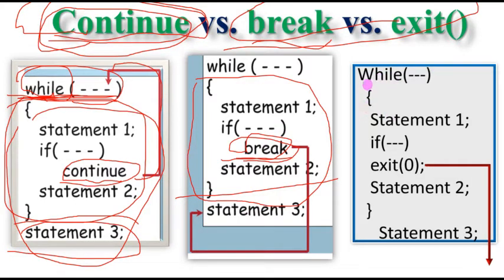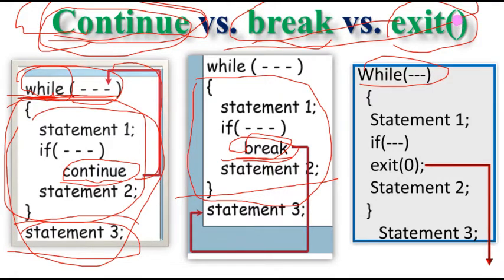When we come to the exit function, inside the parentheses you must give a value — it may be zero, one, negative one, or any other value. You cannot leave it empty. For example, I give the value zero inside the parentheses. It cannot be left empty; you must provide a value such as minus one, one, or zero inside the parentheses.